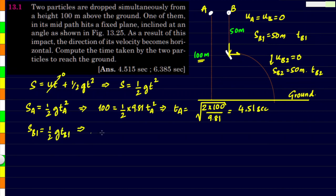This implies that sB1 = 50 = 1/2 × 9.81 × tB1². That implies tB1 is equal to the square root of 2 × 50 divided by 9.81.